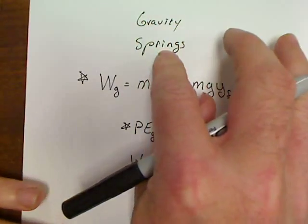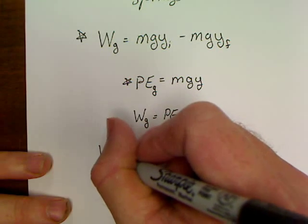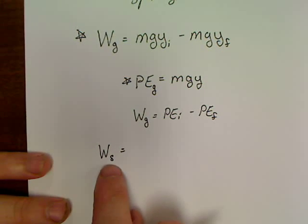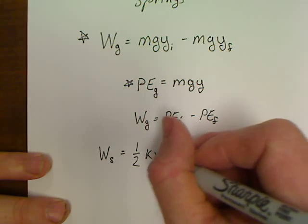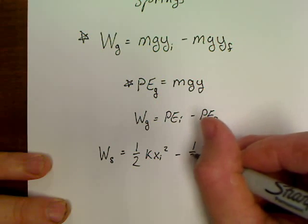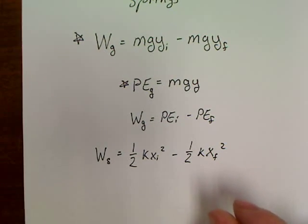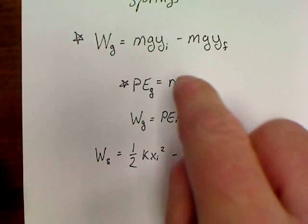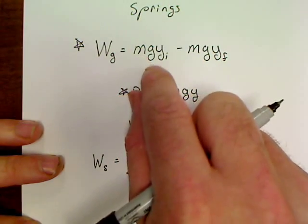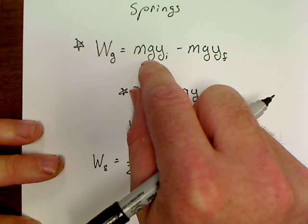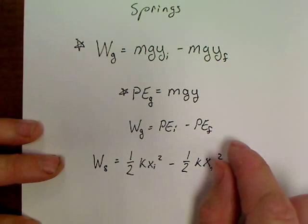Now let's take a look at the equation for spring. Both of these equations look very similar to each other. Work done by spring is equal to one-half KXi squared minus one-half KXf squared. Now, the MGY makes perfect sense. You know these terms already. Mass, G for gravity, 9.8, at least if you're here on Earth. And then Y, meaning our displacement in this vertical direction.